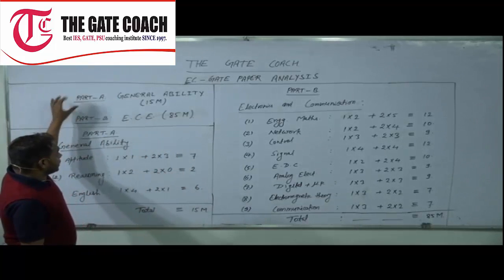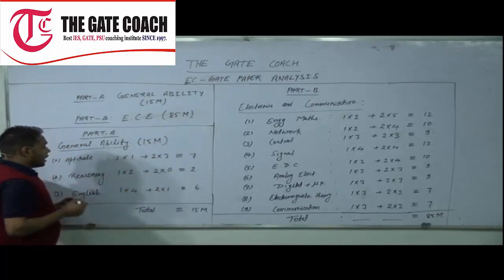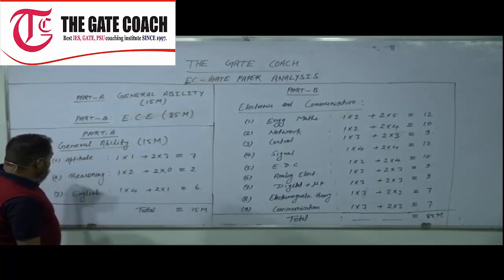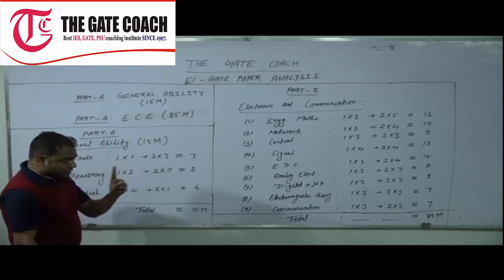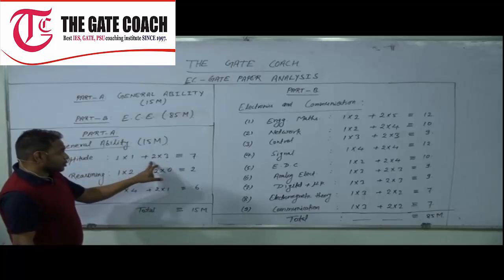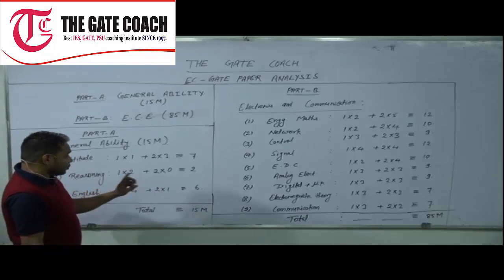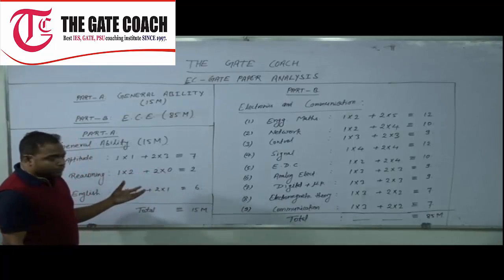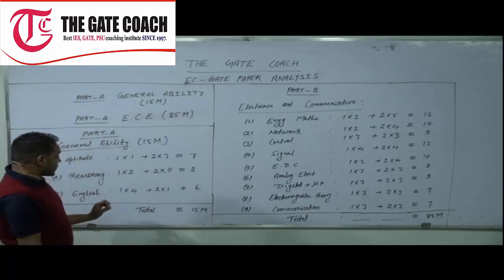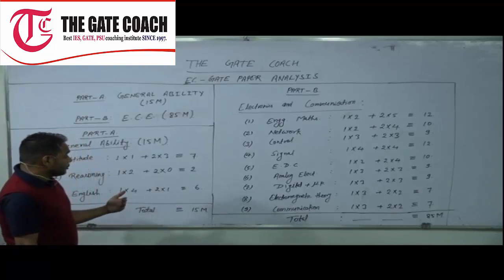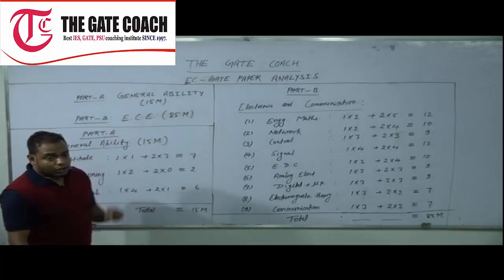In general ability, it has a weightage of 15 marks. Out of those 15 marks, on average: quantitative aptitude has 1-mark and 2-mark questions totaling around 7 marks; reasoning has 2 one-mark questions totaling 2 marks; and English has 4 one-mark questions and 1 two-mark question — giving a total of 15 marks from Part A.